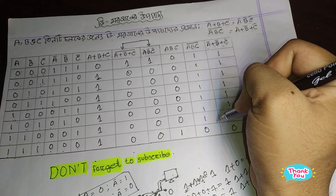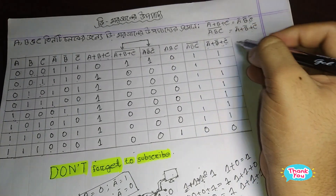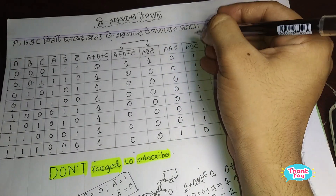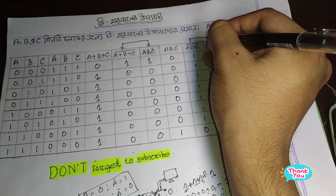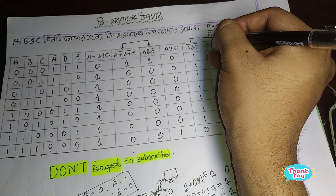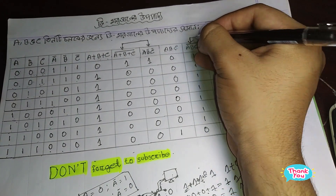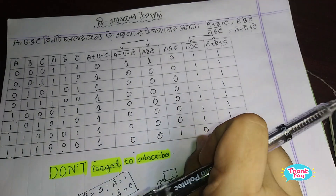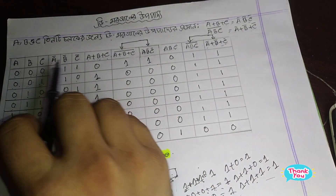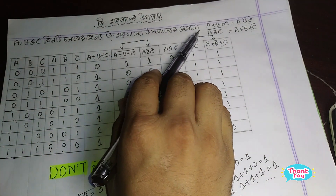This is the last step — the second step — and our final conclusion shows the three-step process called De Morgan's theorem.